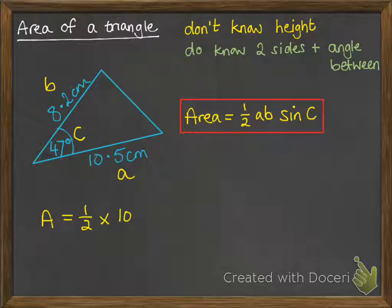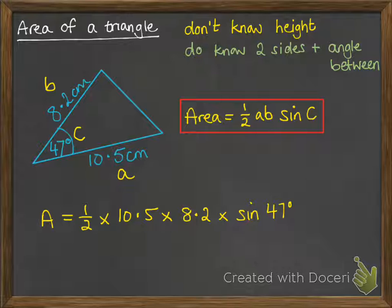So, the area is half times AB, which is 10.5 and 8.2, so multiply them all together, then multiply it by sine of the angle that's between them.